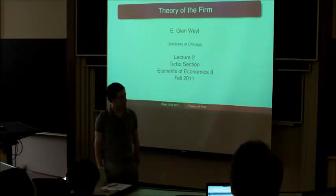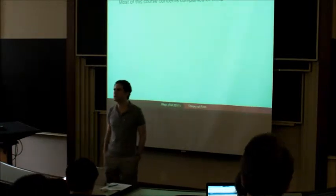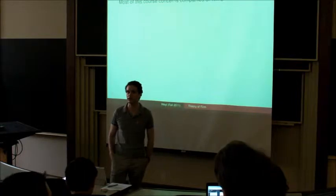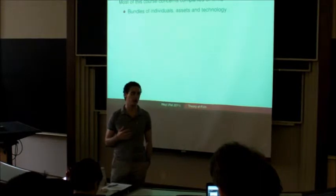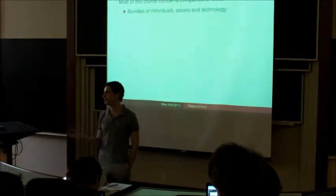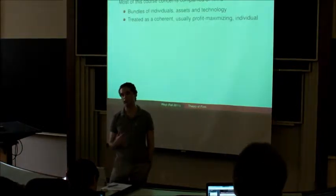Okay, why don't we get started. This course is mostly going to be about the theory of how companies, or what economists call firms behave. Basically a firm or a company is a group of physical assets, people, and technology which we typically treat as a coherent profit-maximizing individual, and that's the way we're going to analyze it throughout most of the course.